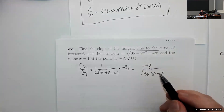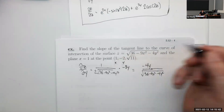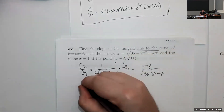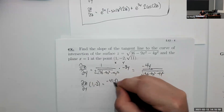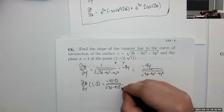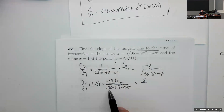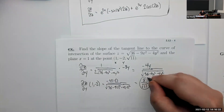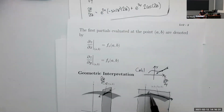This is the partial derivative for any x and y, but we want specific values: x=1 and y=−2. Plugging in: numerator is −4·(−2) = 8. Denominator: √(36−9(1)²−4(−2)²) = √(36−9−16) = √11. So the slope of the tangent line to the curve of intersection is 8/√11. Interestingly, the denominator √11 is not a coincidence — the denominator is just z, so we could write the derivative as −4y/z.